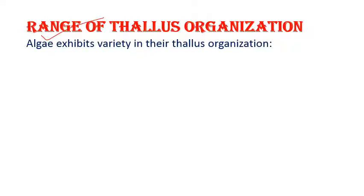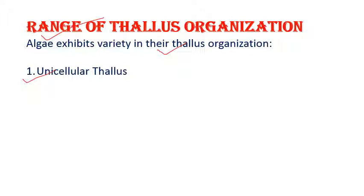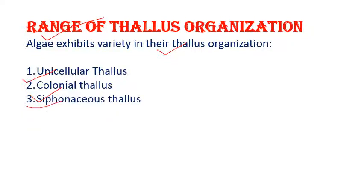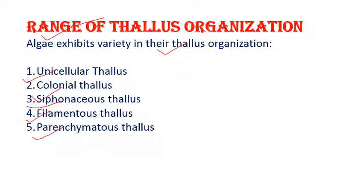There are various forms of thallus organization in Algae. For example, we have unicellular forms — a single cell represents the full individual. Then we have colonial thallus, formed of more than one cell. Siphonaceous forms are pipe-like structures. Then filamentous thread-like structures and parenchymatous structures.